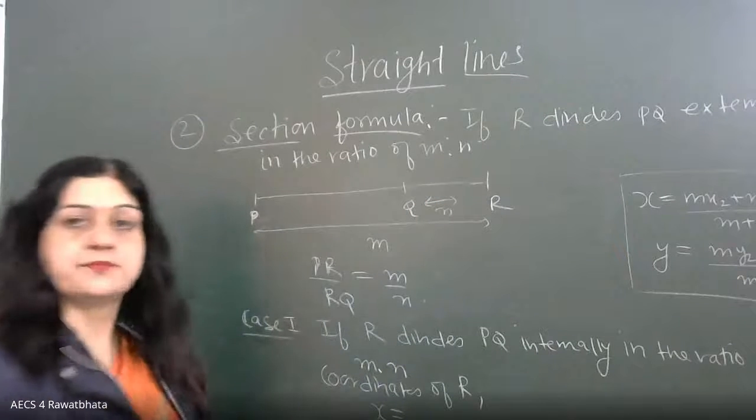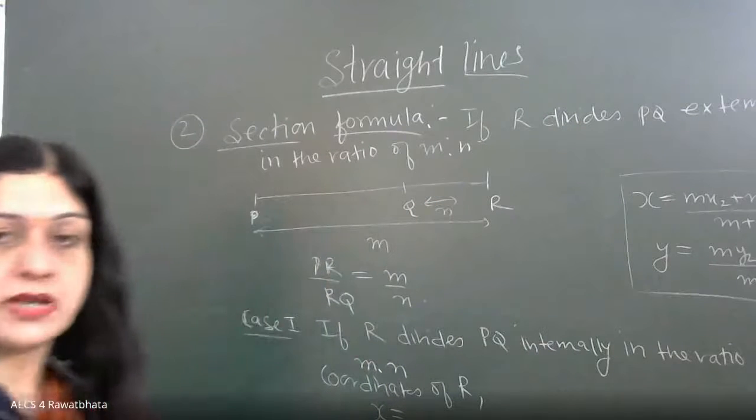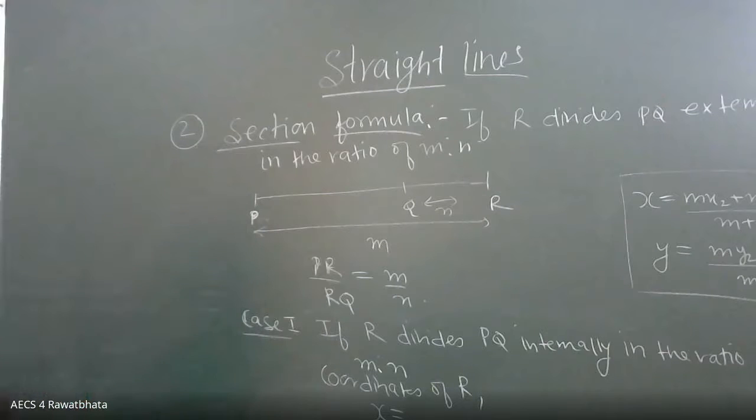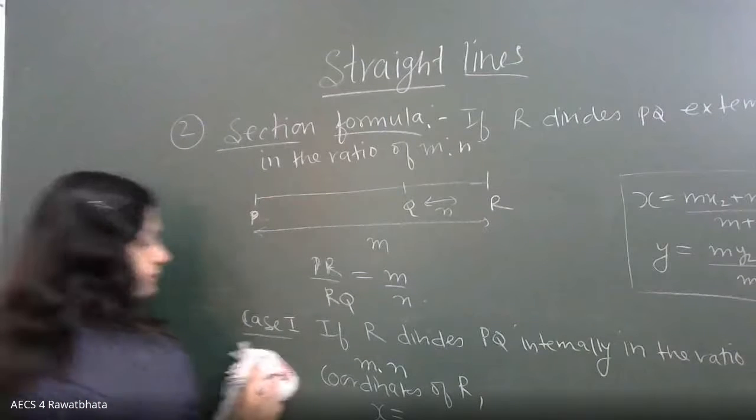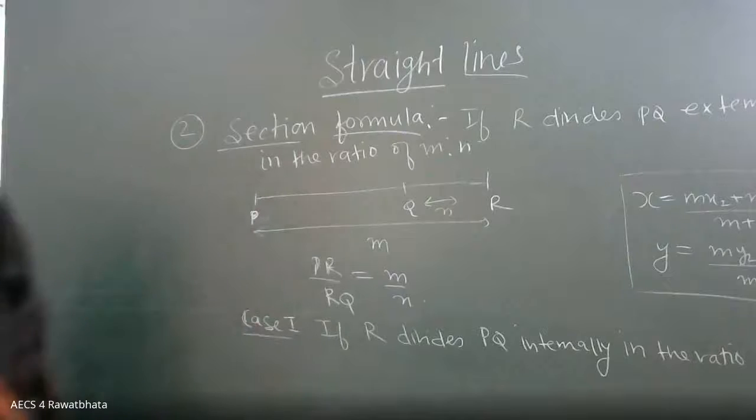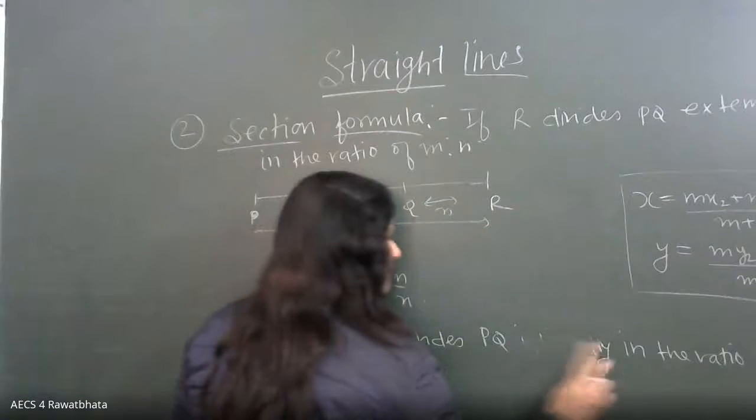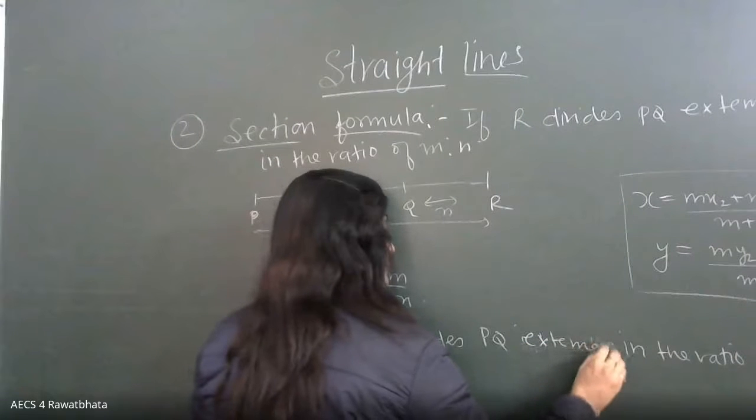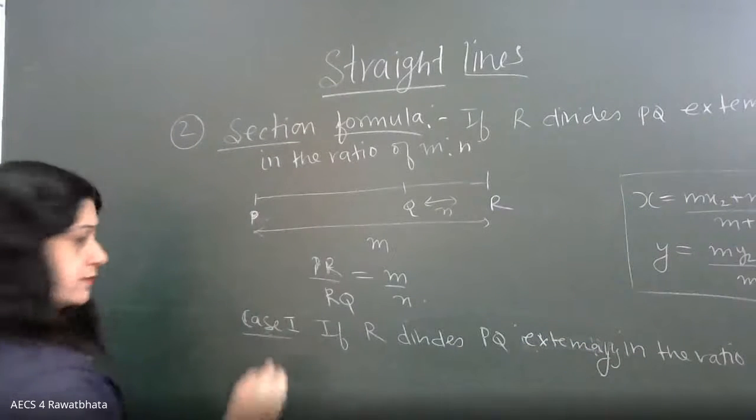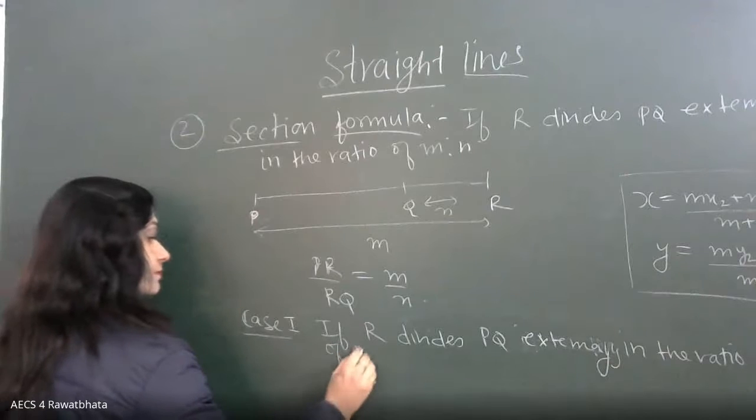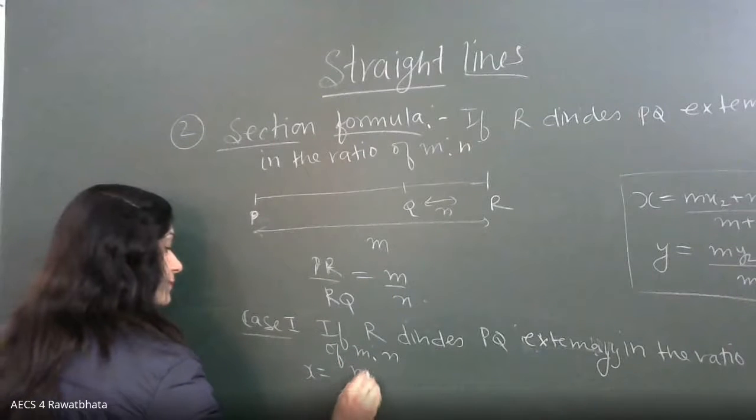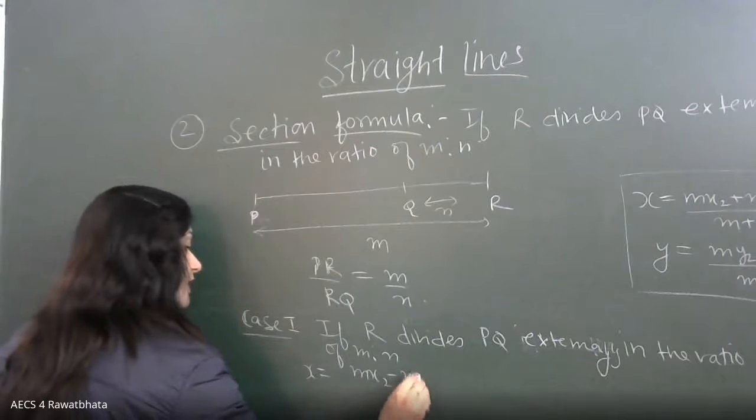So in this case if it divides externally, the only difference will be of sign. If R divides externally in the ratio of M is to N, then what will be X? M X2 minus N X1.